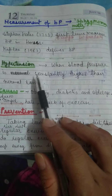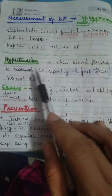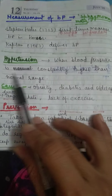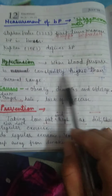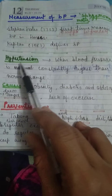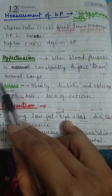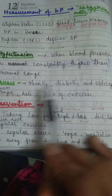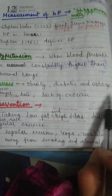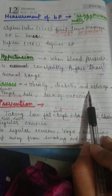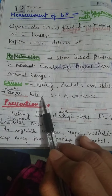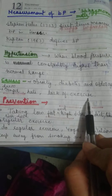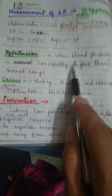Now, hypertension. Hypertension means when a person's blood pressure is constantly higher than the normal range of 120 by 80, that condition is called hypertension. Causes of hypertension include obesity, diabetes, older age, anger or stress, and lack of exercise.